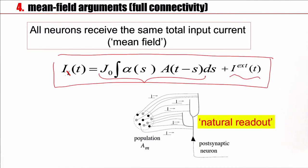Let me summarize this section. The total input into any neuron in a fully connected network is given by the population activity and the external input, where the external input summarizes the input arising from other populations.